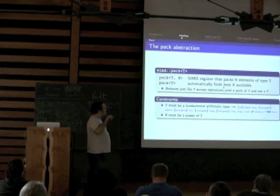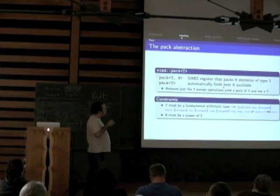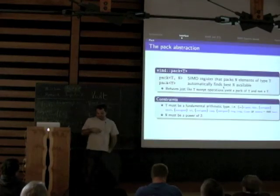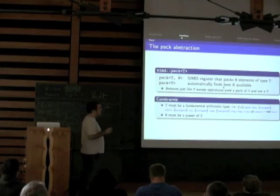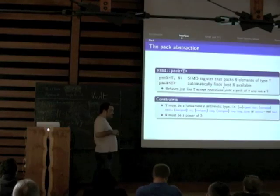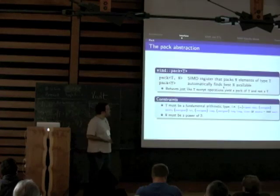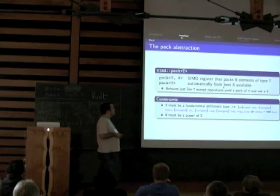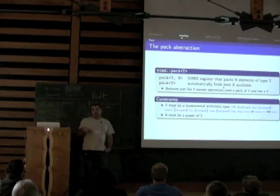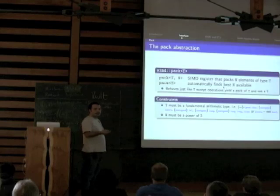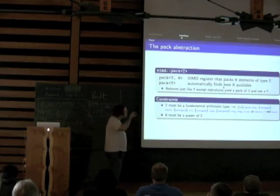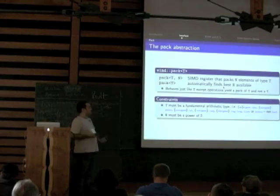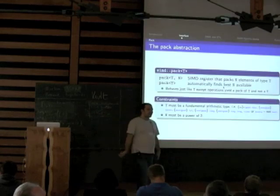What we want is to completely abstract away the vector types and provide whatever normal operations you want on these types. We have a first abstraction called pack<T, N>, a class taking two parameters: the type of element you want to store in your SIMD register, and how many. By default, if you don't specify N, we find the best N available for your type T on the current architecture — the N that actually corresponds to a native SIMD register. For example, on x86 with SSE2, pack<float> is equivalent to pack<float, 4>. Everything is determined at compile time through a small meta-function.